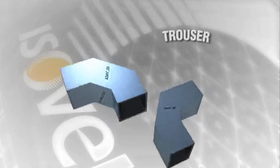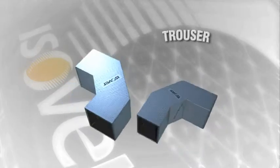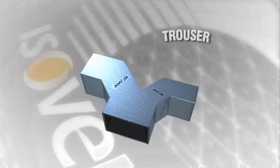Trouser. This assembly separates a single air flow into two air flows. A common name for this assembly is a trouser.